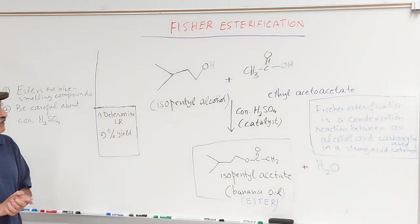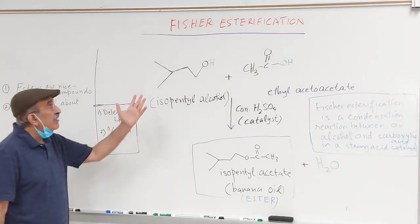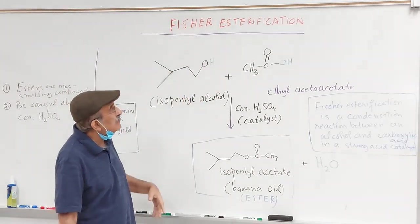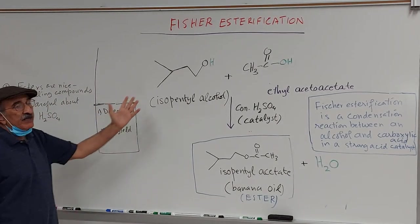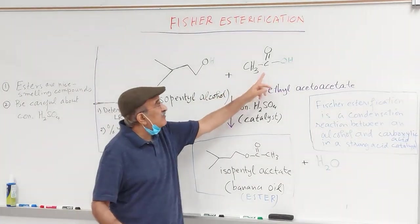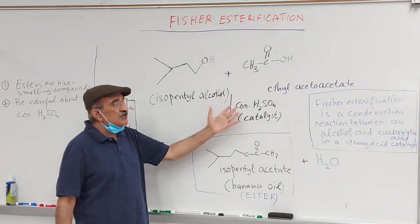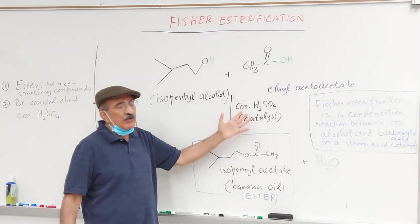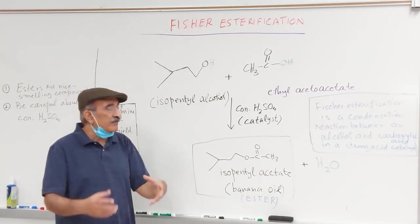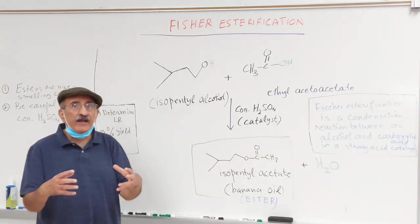In today's lab, we'll be carrying out a chemical reaction which in organic chemistry is called Fischer esterification, named after Emil Fischer, a great chemist. We discovered that if you take any alcohol and carboxylic acid (COOH), if you mix them together in the presence of a strong acid like sulfuric acid or perchloric acid as a catalyst, then you mix them together and heat them, you get ester formation. You can make an ester by combining alcohol and a carboxylic acid.